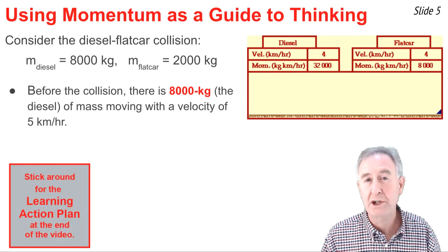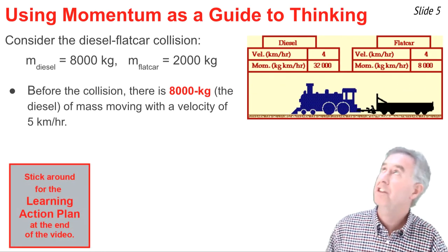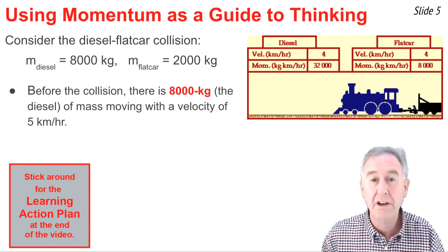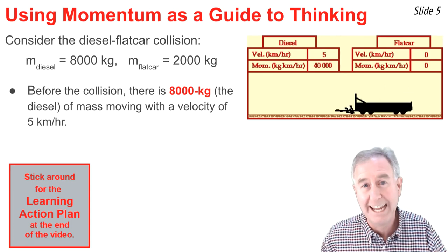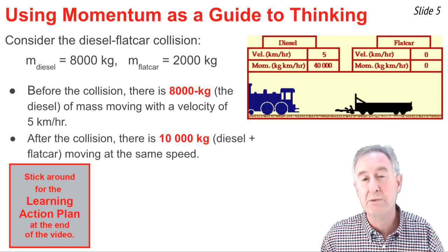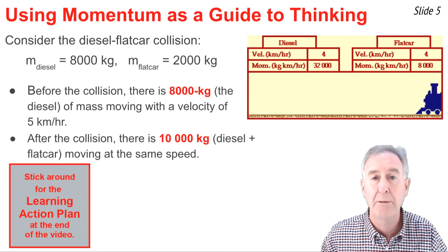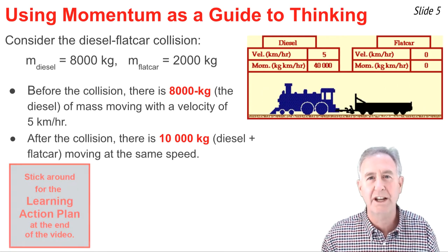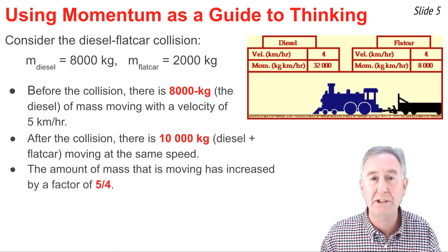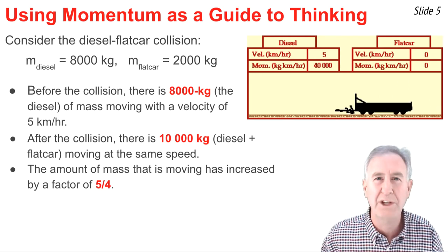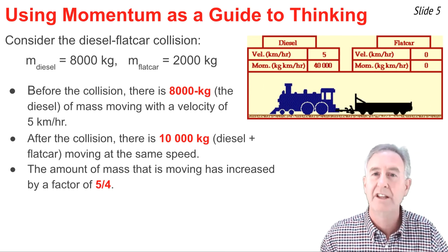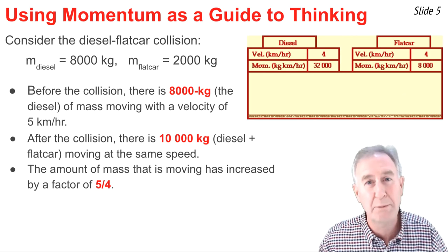In this first example, we look at a collision between a diesel engine with mass 8,000 kg and a flat car with mass 2,000 kg. Before the collision, all momentum is in the 8,000 kg diesel moving at 5 km/h. After the collision, the diesel and flat car move together — that's 10,000 kg. The amount of mass moving has increased by a factor of 5/4, or 1.25: 10,000 divided by 8,000 equals 1.25.